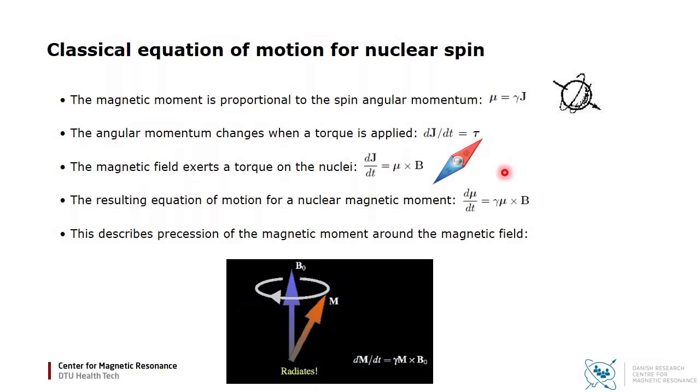We can calculate that using the cross product μ × B. That brings us to the resulting equation of motion for a nuclear magnetic moment: dμ/dt equals γ μ × B. This describes a precession, which is a circular motion happening at a frequency γ times B.